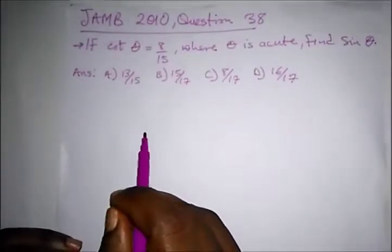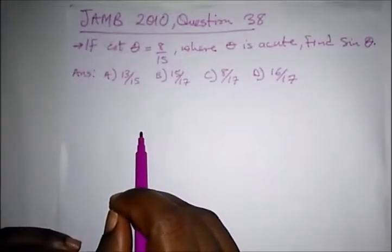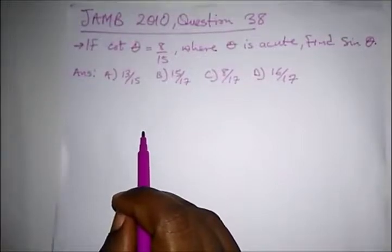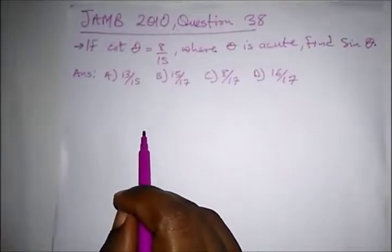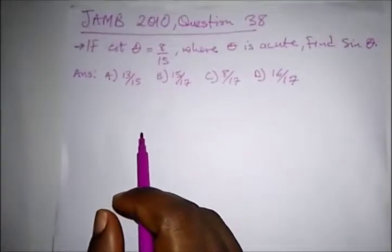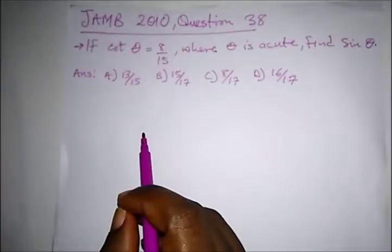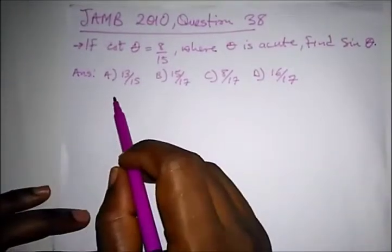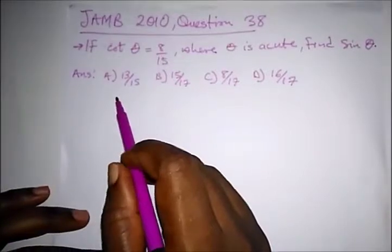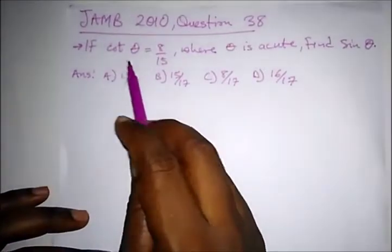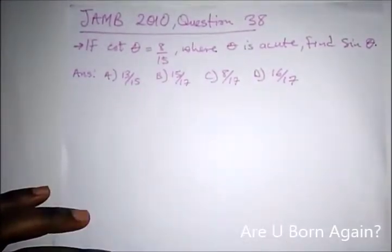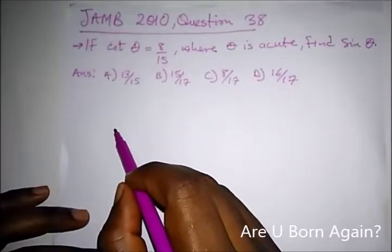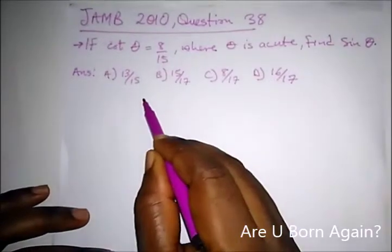Hello viewers, welcome to Destined to Win Tutorials. Today we're going to be taking some past questions from JAMB on trigonometry — specifically on special angles and the trigonometric ratio. Here we have a question from JAMB 2010, Question 38, which says: if cot θ is equal to 8 over 15, where θ is an acute angle, find sin θ.